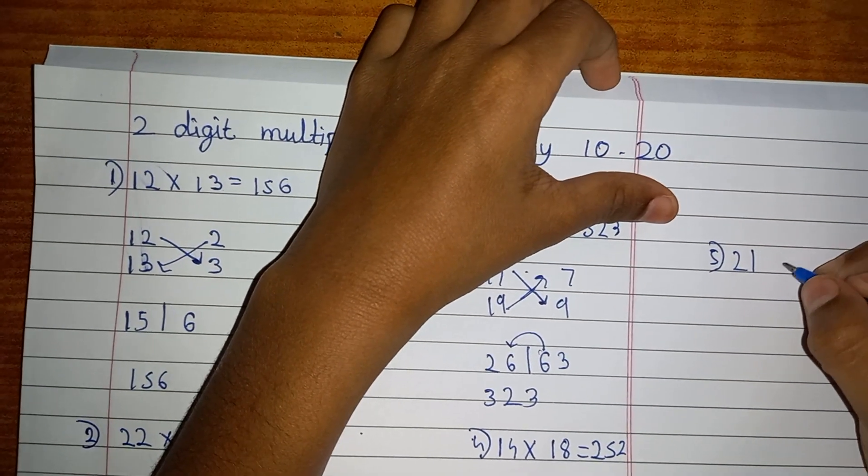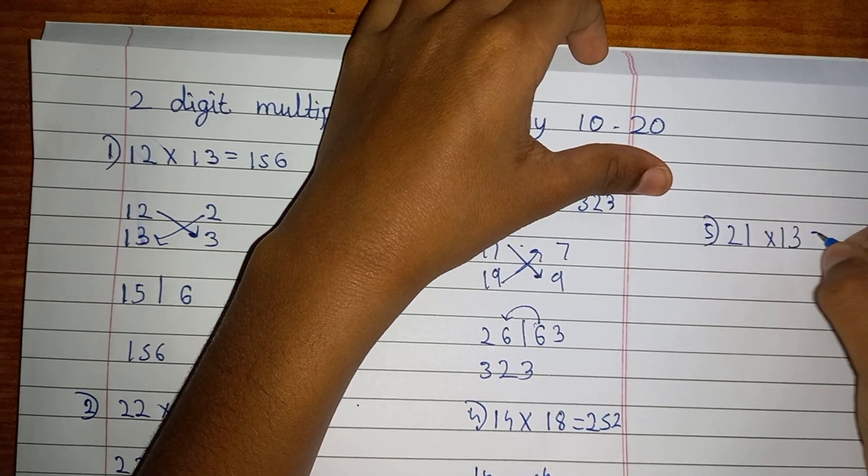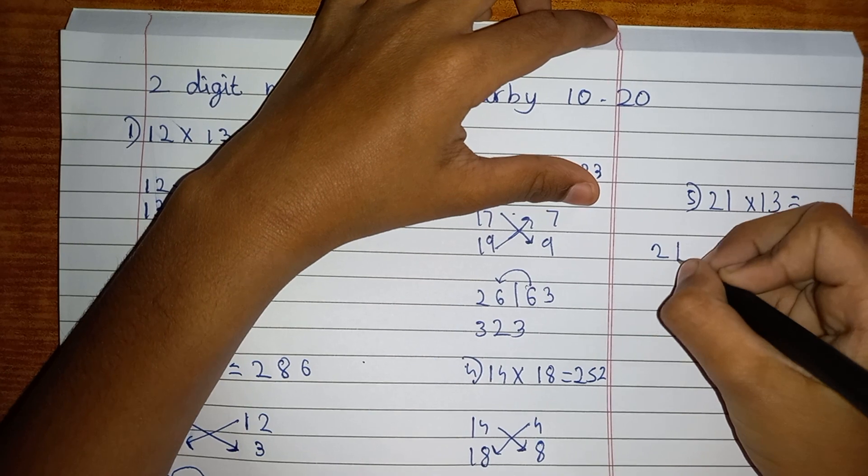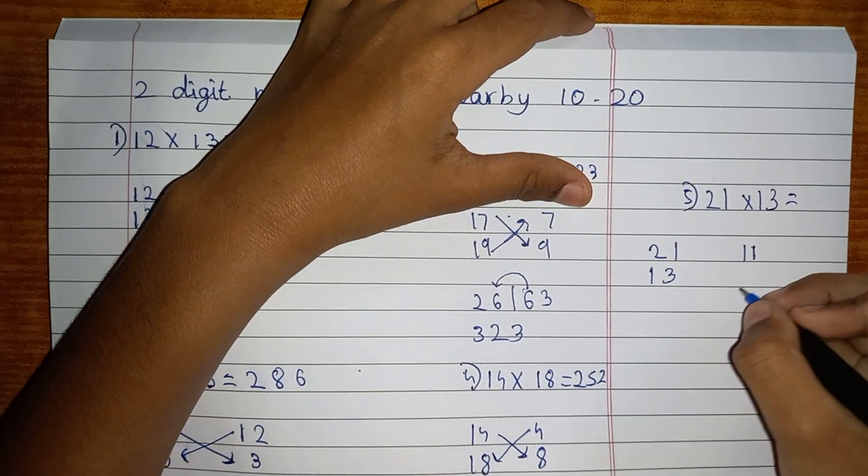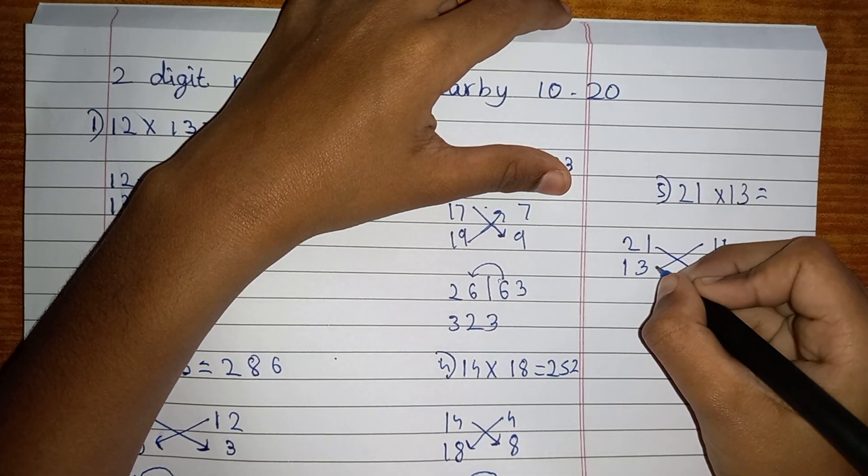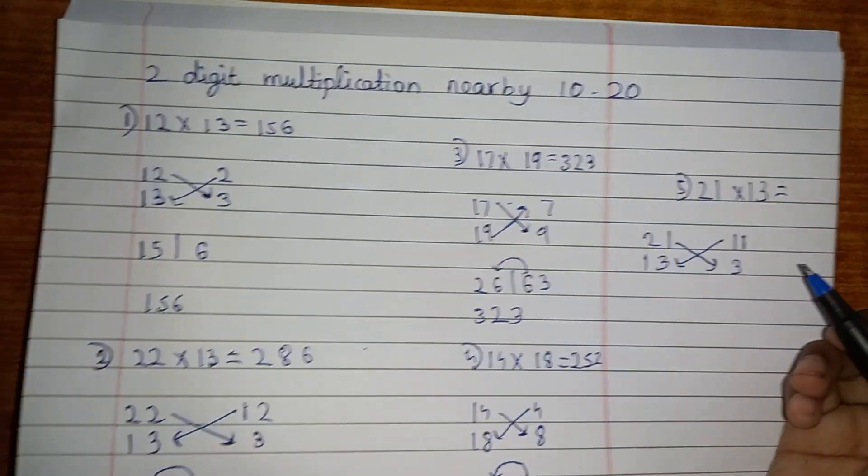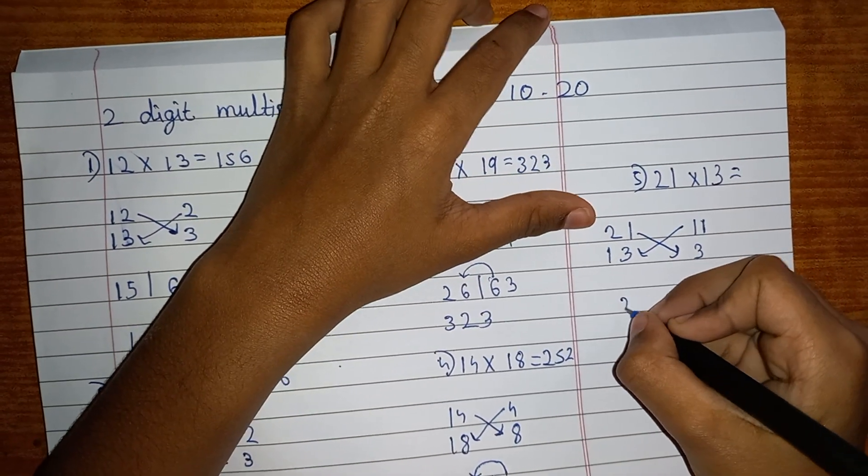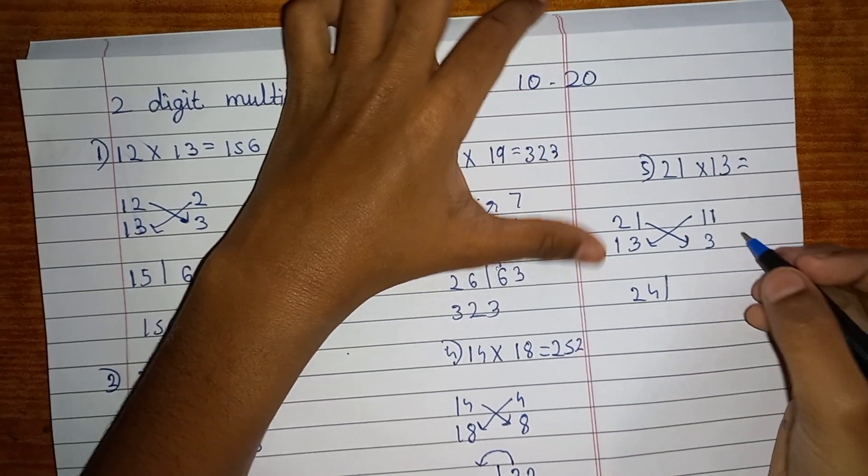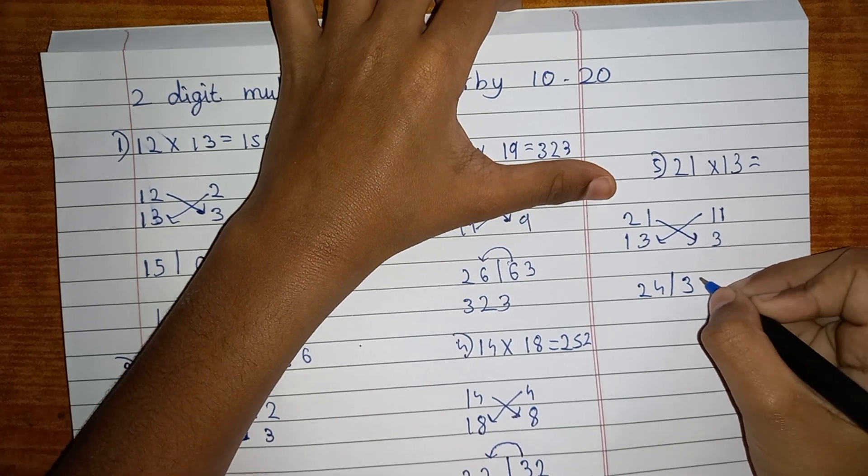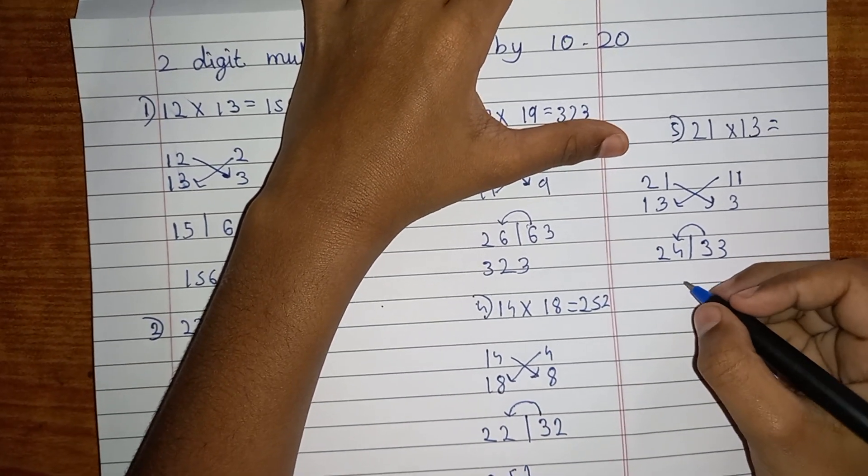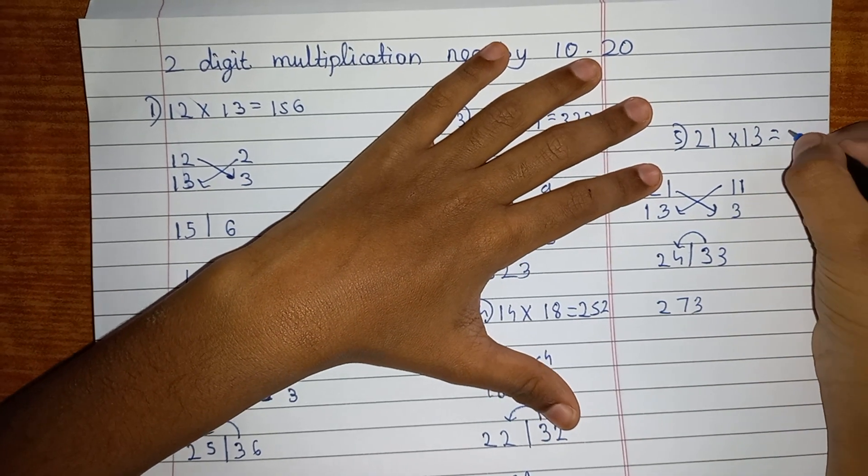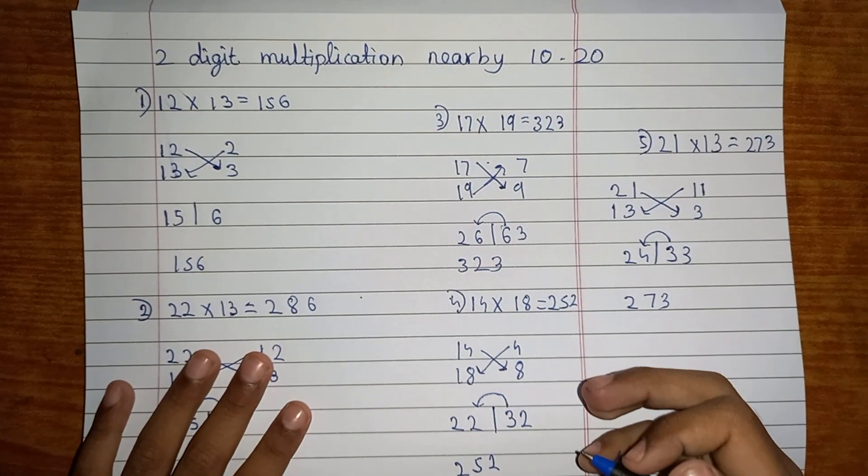Let's go with another one. It may be 21 multiplied by 13. Let's see how much it is. Write 21 here, then 13 here, then 11, then 3. Now add them. 21 plus 3 or 11 plus 13, you will get the same answer which is 24. Then keep a line. Then you have to do 11 times 3 is 33. Now you have to take the 3 and add it to the 4. So the answer will come as 273.